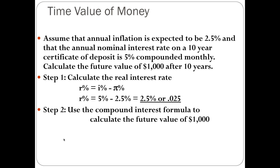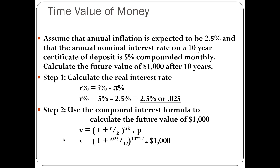Next, use the compound interest formula V equals (1 plus R over K) to the NK times P. Plugging in: V equals (1 plus 0.025 divided by 12) to the 10 times 12, times $1,000 — because interest is compounded monthly, K equals 12. The future value of money works out to $1,283.69. That will be the future value of that $1,000 after 10 years.